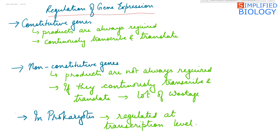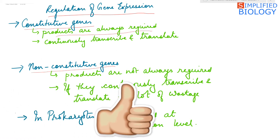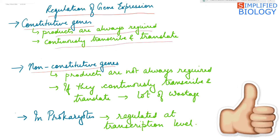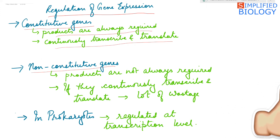Why does gene expression need to be regulated? There are two types of genes present. One, the constitutive genes, and the second, non-constitutive genes. Constitutive genes are those whose products are always required by the cell. Hence these genes continuously transcribe and translate — they are required for the survival of the cell. Such genes are known as housekeeping genes.